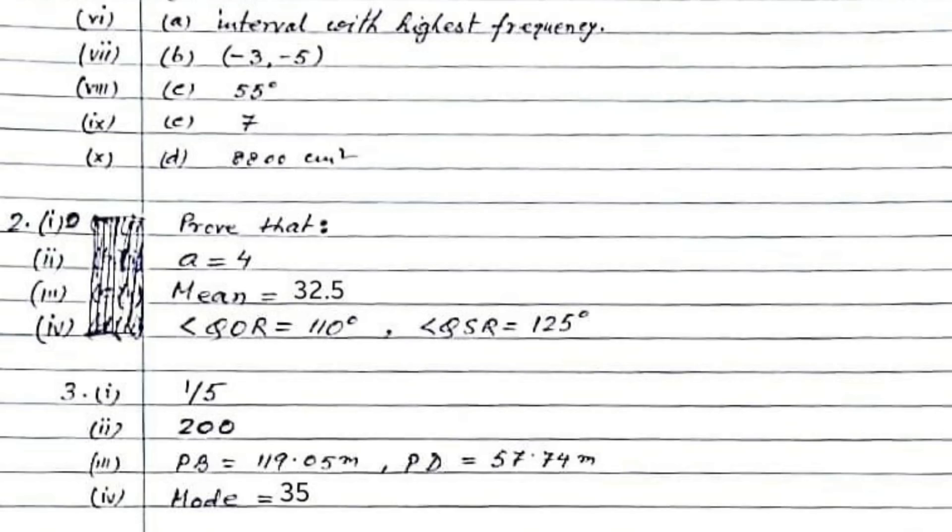The third question about two lampposts AB and CD: you need to find the distances PB and PD. PB will be 119.5 meters, PD will be 57.74 meters.